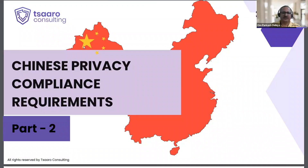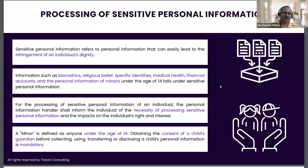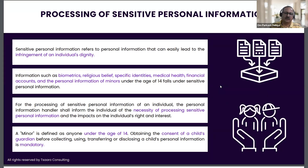On this slide we have the processing of sensitive personal information. As discussed, spatially designated status is part of sensitive personal information, but other categories include biometric characteristics, religious belief, medical health, financial accounts, and location tracking of individuals — all of these come under sensitive personal information.